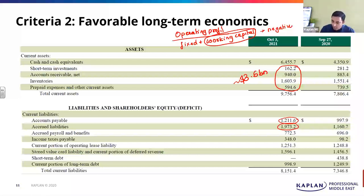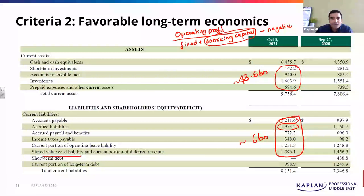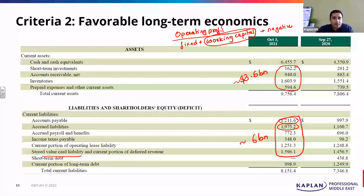There are also a lot of customers who pay in advance — look at your stored value card liability. The stored value card liability is nothing but customers who have paid in advance. If you add this up, you have a number of close to $6 billion. If you look at working capital not just as current assets minus current liabilities, but rather as operating current assets minus how much is funded by suppliers or external creditors excluding banks, what you see is that this is basically a company with negative working capital.